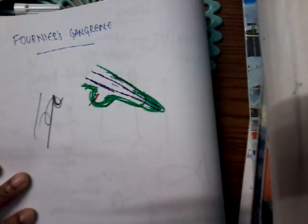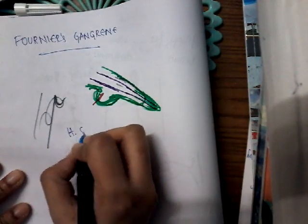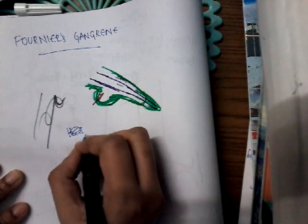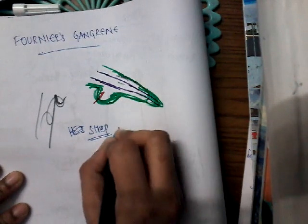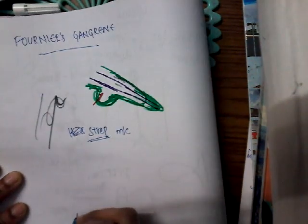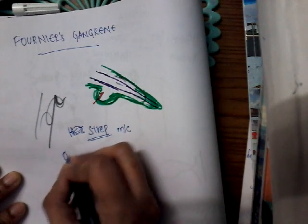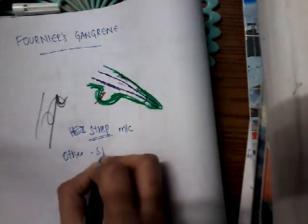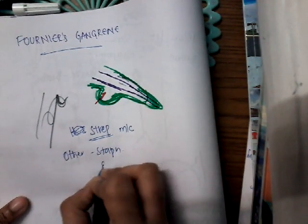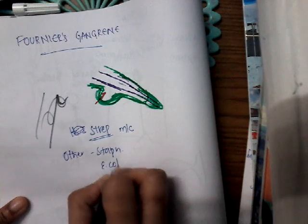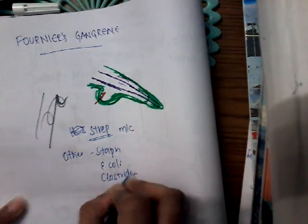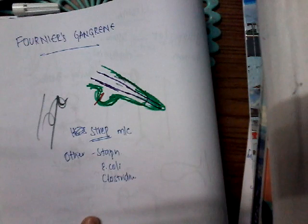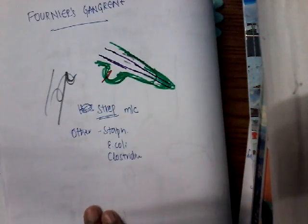What are the organisms involved in Fournier's gangrene? Most commonly, Streptococcus is the most common organism involved. Others like Staphylococcus can be involved sometimes, and sometimes E. coli or Clostridium can also be involved. These are the different organisms involved in Fournier's gangrene.